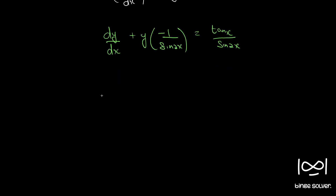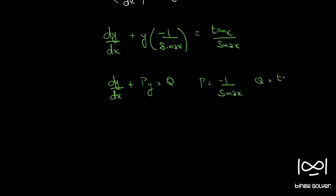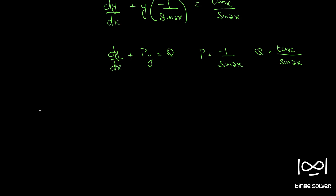So now the differential equation is in the standard form of a linear differential equation. The linear standard form is dy/dx + py = q, where p and q should be functions of x alone or constants. Here p is minus 1/sin2x and q is tanx/sin2x. So both are functions of x alone, confirming this is a linear differential equation.